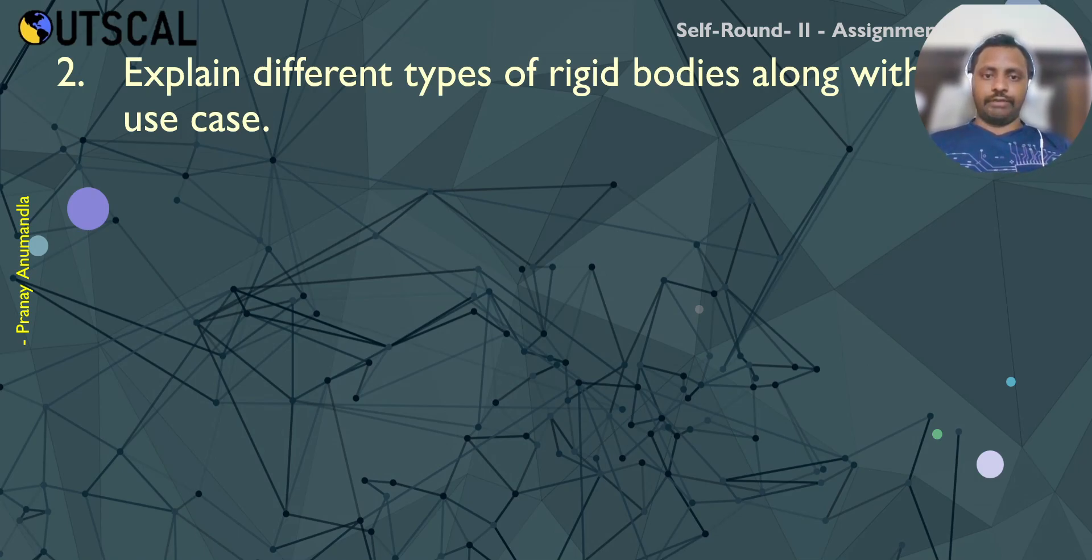The rigid body types are three types. Dynamic rigid body, kinematic rigid body, and static rigid body. Dynamic rigid body can be moved by physical forces such as gravity. If we attach a rigid body component to an object, even if we don't apply any force, it will fall down because it will be affected by gravity. The dynamic rigid body works like this, it will be affected by physical forces.